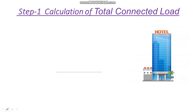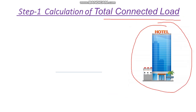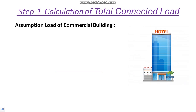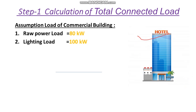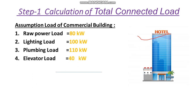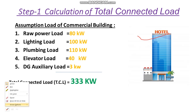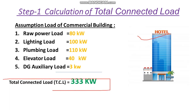Now let's follow these steps one by one. In Step 1 we have to calculate the total connected load. We are considering a hotel building as a commercial building example. The assumed loads are: raw power load 80 kW, lighting load 100 kW, plumbing load 110 kW, elevator load 40 kW, and DG auxiliary load 3 kW. Summing these gives a total connected load of 333 kW.